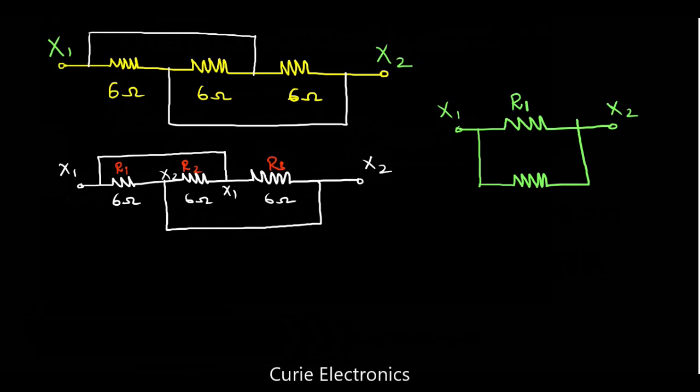R2 is connected between X1 and X2. That means, all these three resistors are connected in parallel. The diagram is just to make us confuse. Nothing more.